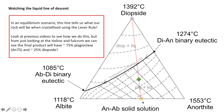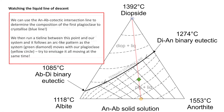To work out the first plagioclase we crystallize, we draw that same line — shown in blue here — and where it intersects the ternary cotectic line, we project across to the line between albite and anorthite. That tells us the composition of the first plagioclase to crystallize is going to be around 85% anorthite, 15% albite.